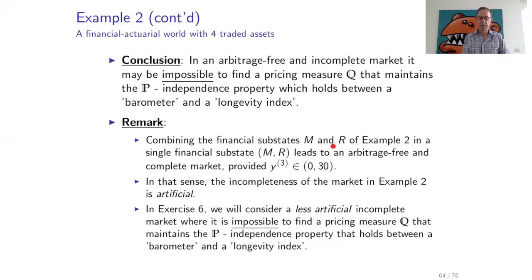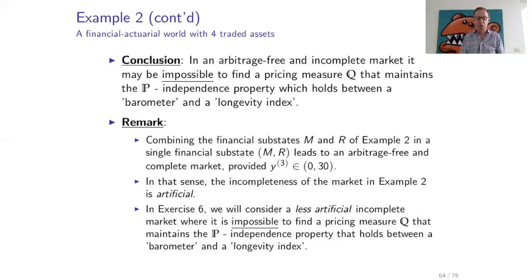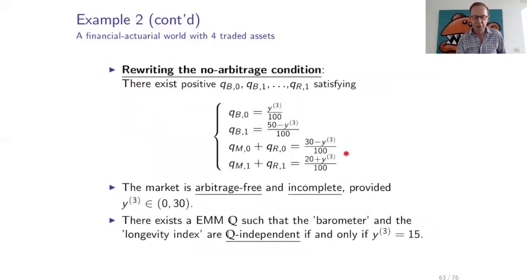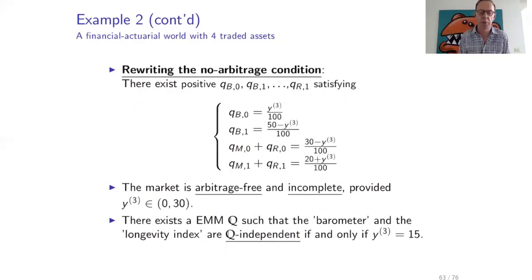We could combine the financial substates M and R of example two into a single financial substate MR. The conditions are on B (booming) and not-B (meaning moderate or recession). So we can just combine them — it is only because we split this combined state into two substates that it leads to incompleteness. Looking at the conditions, there is a condition on Q(M) and Q(R) together, and the reason is that there is no asset traded in the market that makes a separation between M and R.